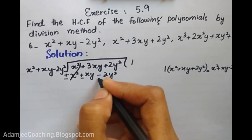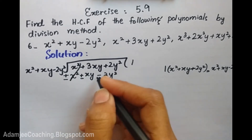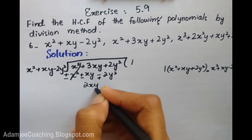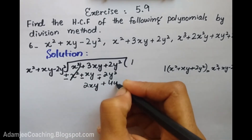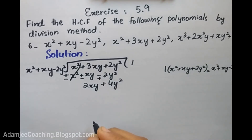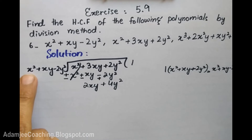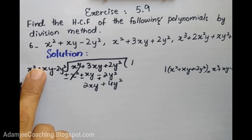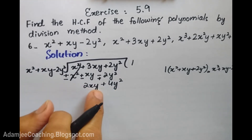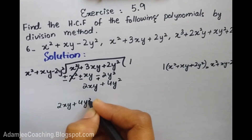After cancellation, minus 3xy becomes minus, and it will be plus. Multiplying by minus 3xy gives a remaining term of 2xy + 2y². Then I get plus 4y². So the remainder is 2xy + 4y², which is smaller than the divisor, so the divisor becomes the dividend.